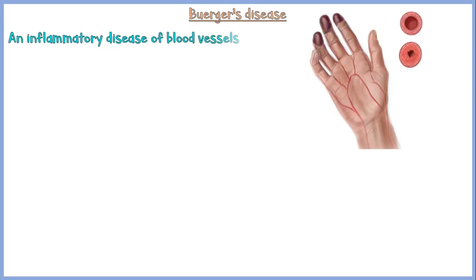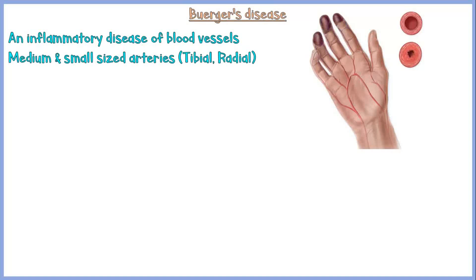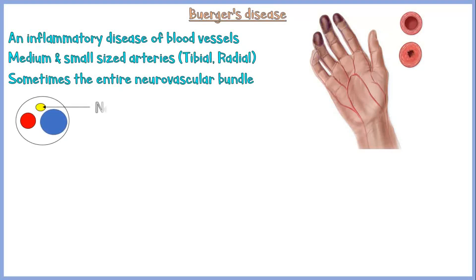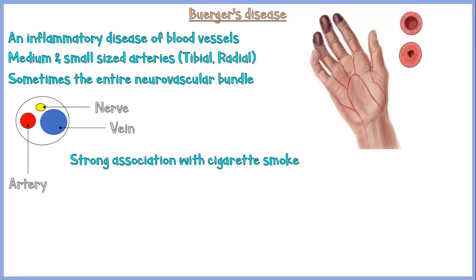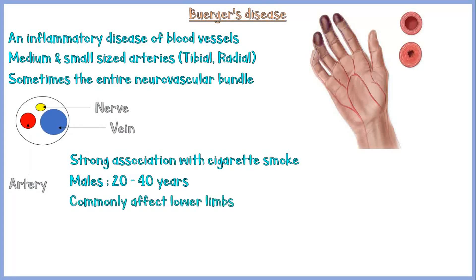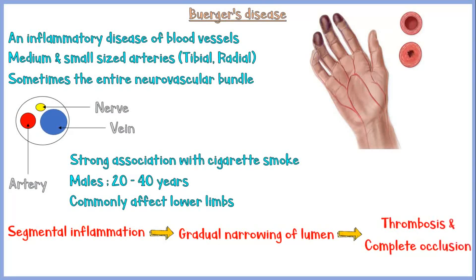Buerger's disease is an inflammatory condition of blood vessels. It mainly involves medium and small-sized arteries, like the tibial and radial artery. However, sometimes it can affect the entire neurovascular bundle, including the nerve, artery, and vein. Cigarette smoke is strongly associated with Buerger's disease, and it affects males of 20 to 40 years of age, commonly in the lower limbs but also the upper limbs. There is segmental inflammation of the arteries, causing narrowing of the lumen and ultimately thrombosis and complete obstruction.